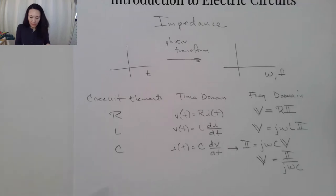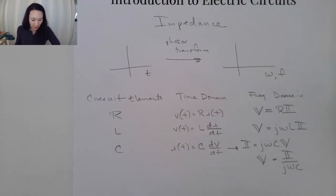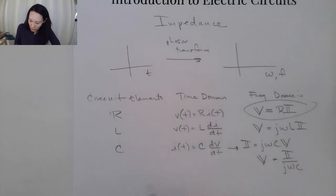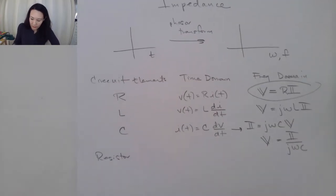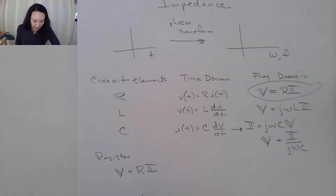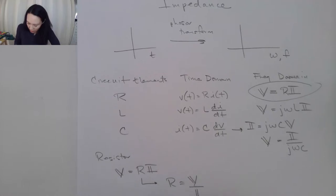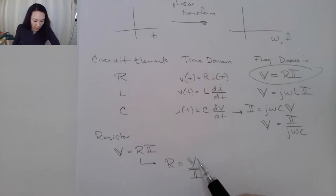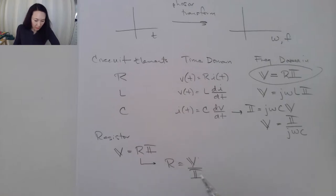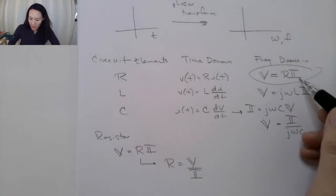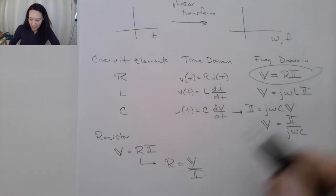Let's start with the resistor since we're a bit more comfortable with it. We can manipulate Ohm's law in the following way. In phasor form, V equals R times phasor I. If we rearrange this to R equals V over I, then the ratio of V to I gives us how much the resistor resists the current flow — that ratio gives us the resistance.